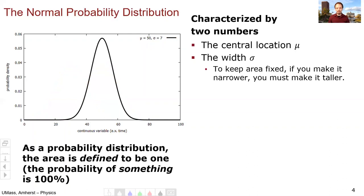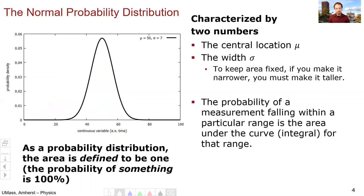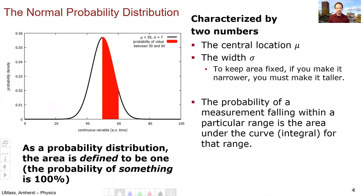So what do I mean by probability density? What does this vertical axis mean? The probability density means that the probability of a measurement falling within a particular range is the area under the curve, the integral in calculus terms for that range. So here, I've shaded in the probability of measuring somewhere between 50 and 60. So if these were times, for example, and I wanted to know what was the probability of measuring between 50 and 60 seconds, well, I would calculate the area under this curve, and that would tell me the probability of measuring between 50 and 60 seconds. Now you can see why the area underneath must be 1, because the probability of something happening must be 100%.